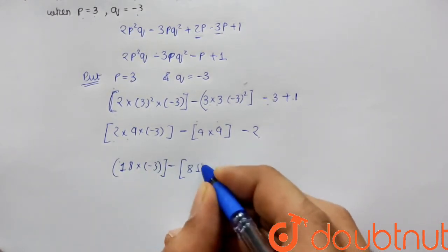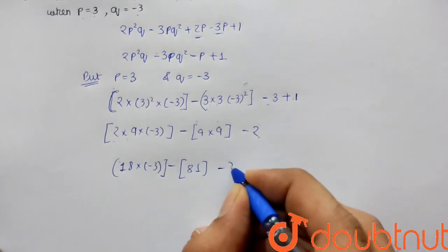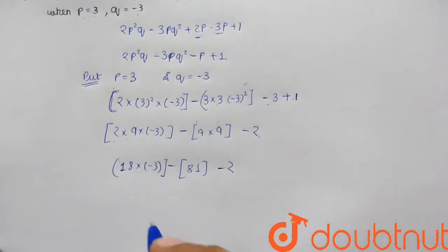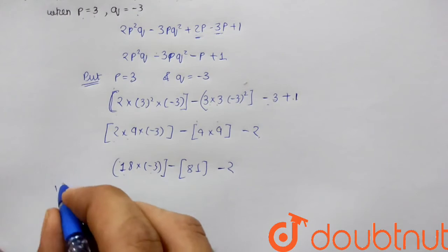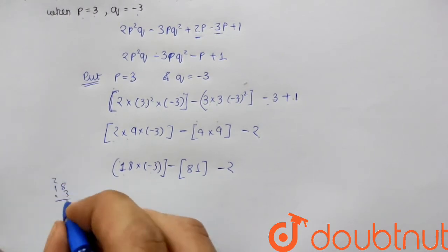9 × 2 is 18, multiplied by -3. Minus 3 plus 1 is -2.